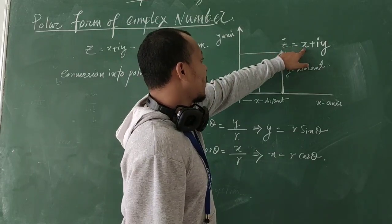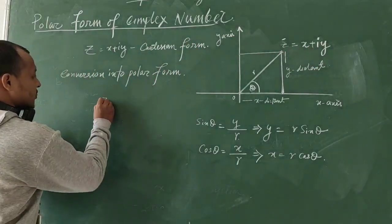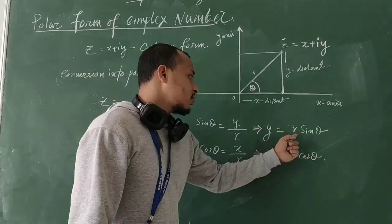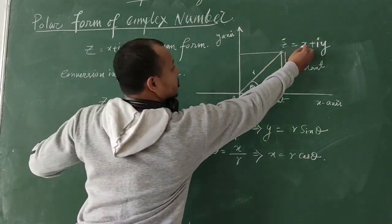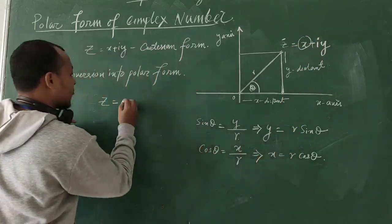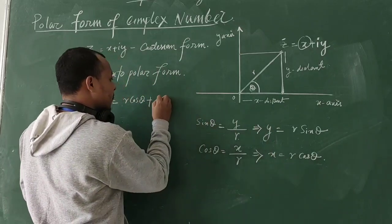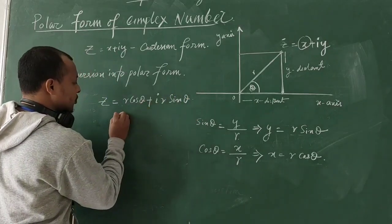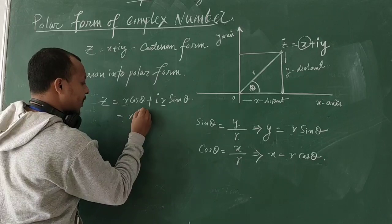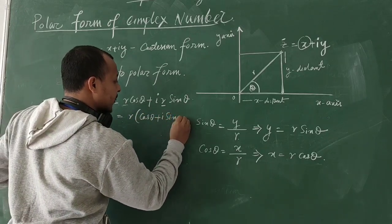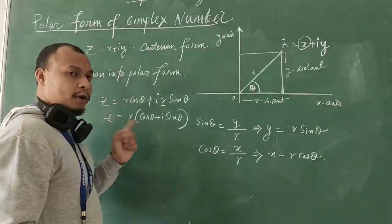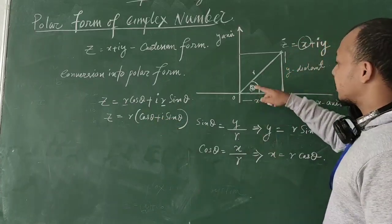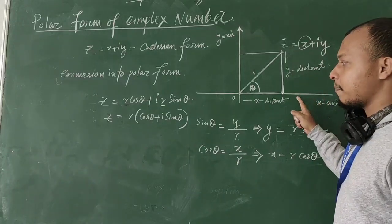So Z equals X plus iY. Substituting X = R cosθ and Y = R sinθ, we get Z equals R cosθ plus i·R sinθ. Taking R common, Z equals R(cosθ + i sinθ). This is the polar form. θ is the angle of inclination with respect to the X axis, and R is the modulus of Z.